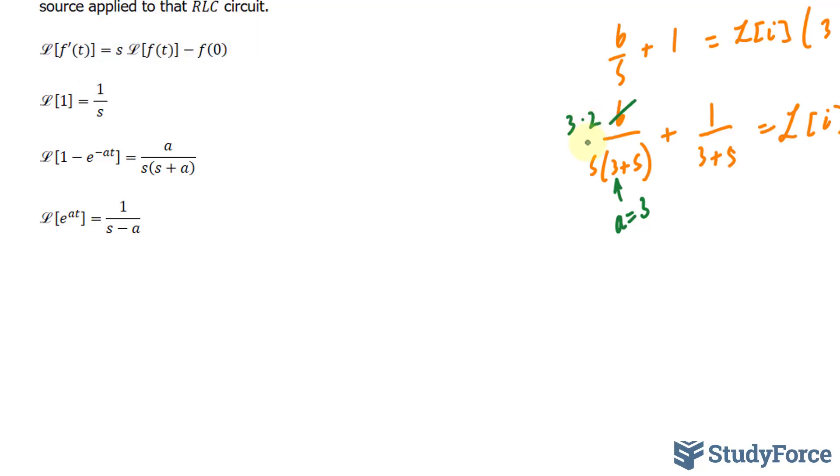And if I were to take the inverse of this expression, I would get 1 minus e to the power of negative 3t, and this is being multiplied to 2. That takes care of this.